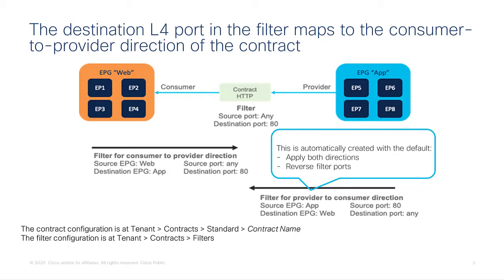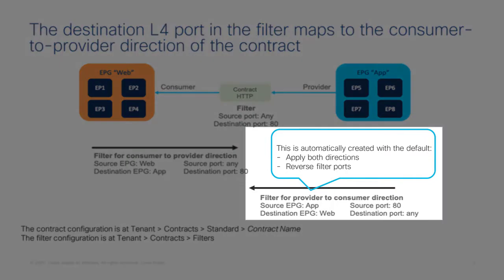If the provider and consumer in this example were reversed, the filter configuration should also be the opposite in terms of source and destination ports. For the majority of configurations, you define a filter with a destination port that is what the provider EPG provides. You also need a reverse filter to allow traffic from the provider EPG back to the consumer EPG. With the default contract configuration — which has the options 'apply both directions' and 'reverse filter ports' automatically selected — this filter is programmed by ACI automatically.